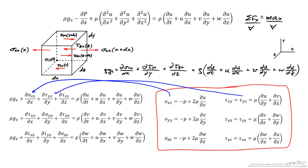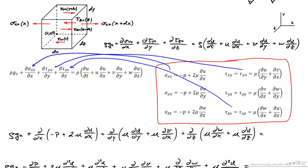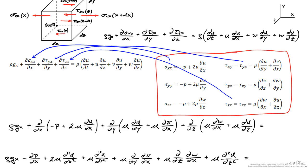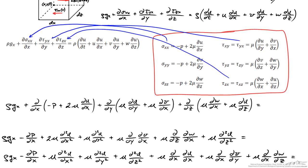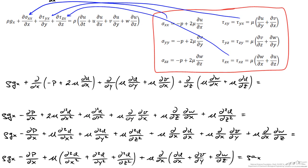The first substitution into the left hand side gives the expression at the bottom. Differentiating the three terms and performing additional manipulations — splitting one term into two parts and switching the order of differentiation — leaves a simplified expression. Interestingly, the sum of ∂u/∂x plus ∂v/∂y plus ∂w/∂z equals zero by the continuity equation, so that entire term is identically zero for an incompressible fluid.